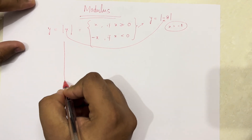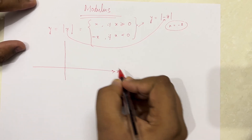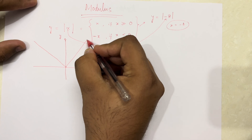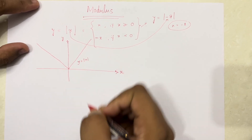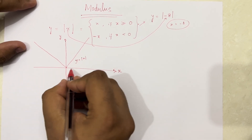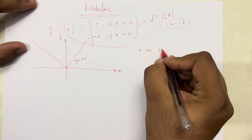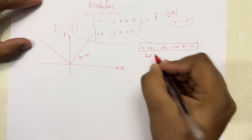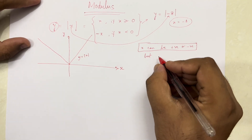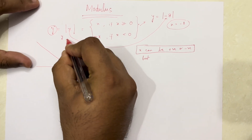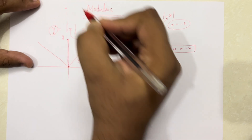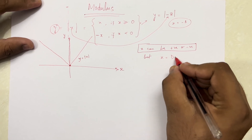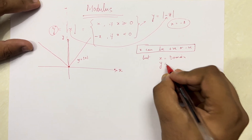The graph of y is equal to mod x looks like this. I am plotting a graph — this is the x-axis, this is the y-axis, and this is the graph of y equals mod x. Whatever value x takes, positive or negative, the output y will always be positive — y lies from zero to infinity. The value of x is known as domain, whereas the value of y is known as range.